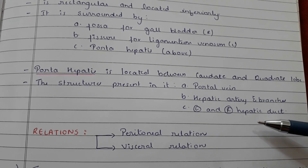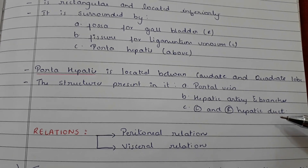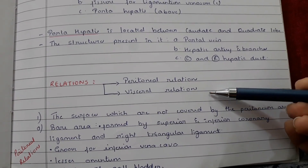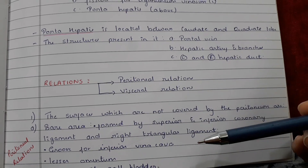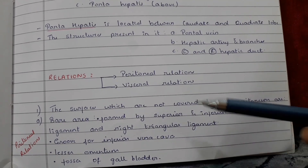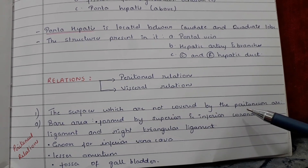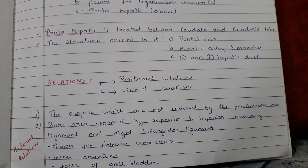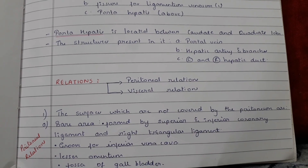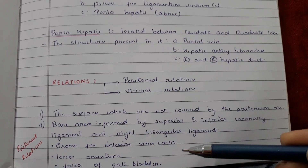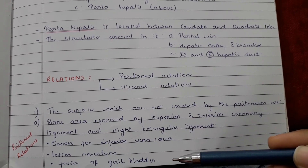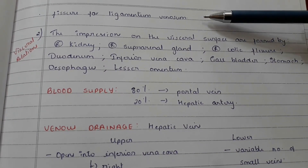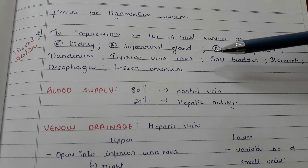Relations of the liver include peritoneal relations and visceral relations. The surfaces not covered by peritoneum are: the bare area formed by the superior and inferior coronary ligaments and the right triangular ligament; the groove for the inferior vena cava; the lesser omentum and fossa of the gallbladder; and the fissure for the ligamentum venosum.